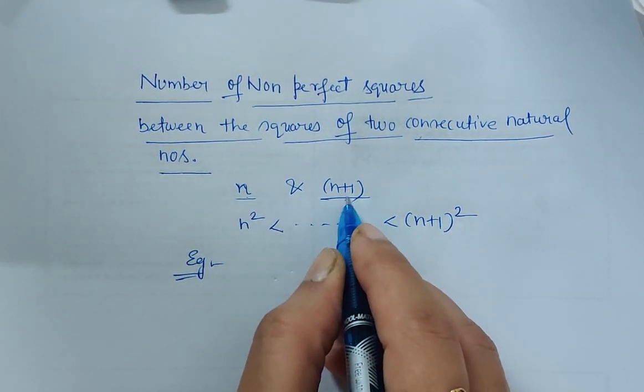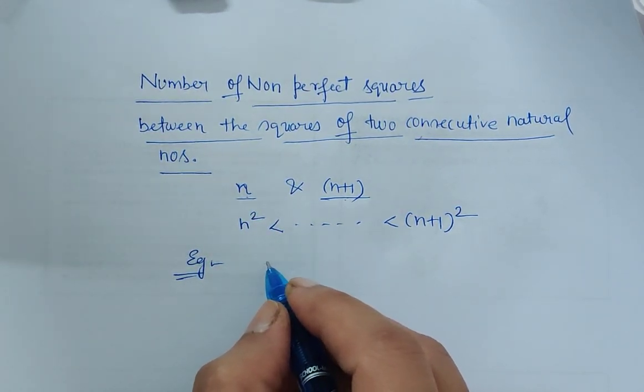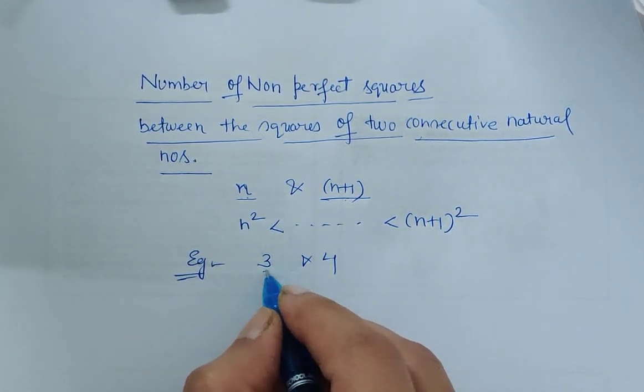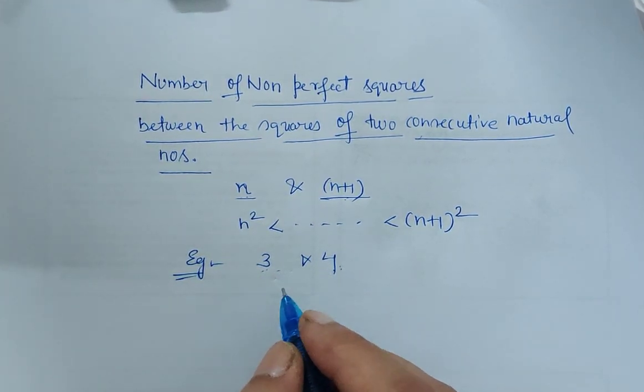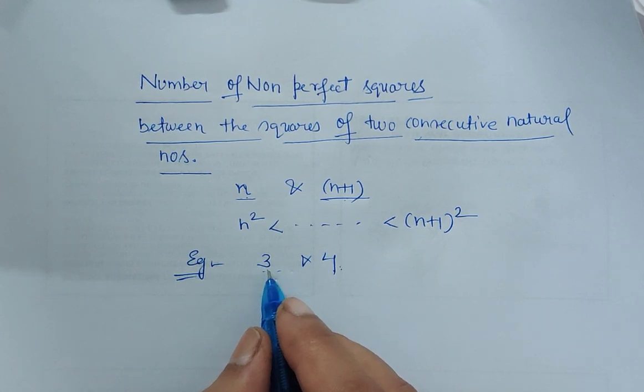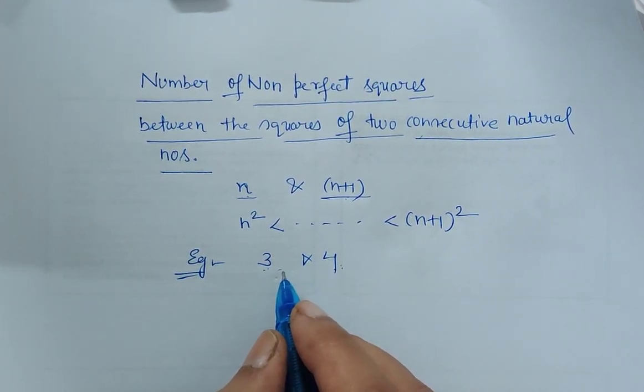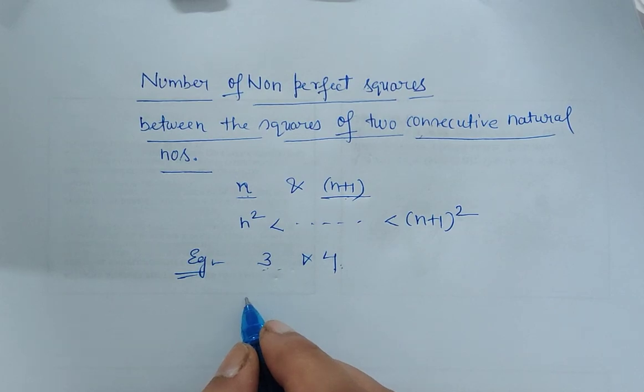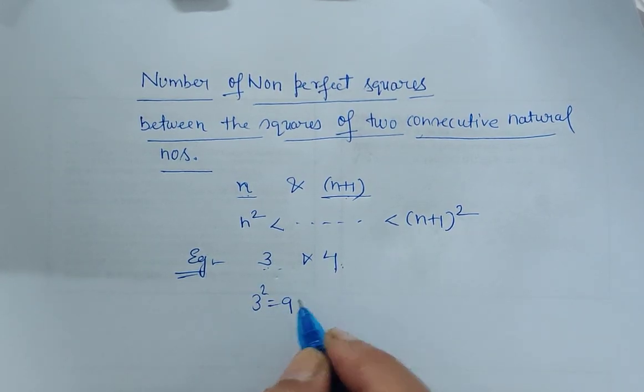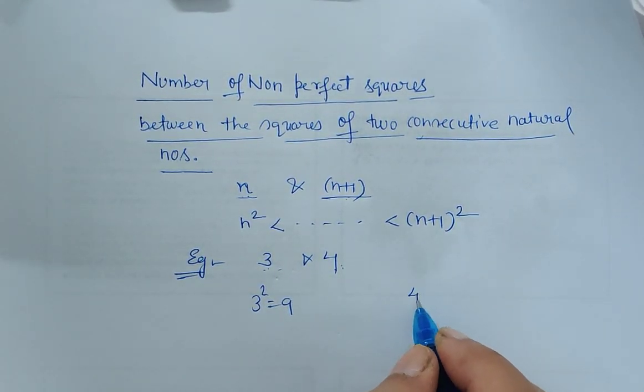Like 3 and 4, they're consecutive in nature. After 3 we have 4. Now what we have to find here is the non-perfect squares that lie between 3² which is 9 and 4² which is 16.